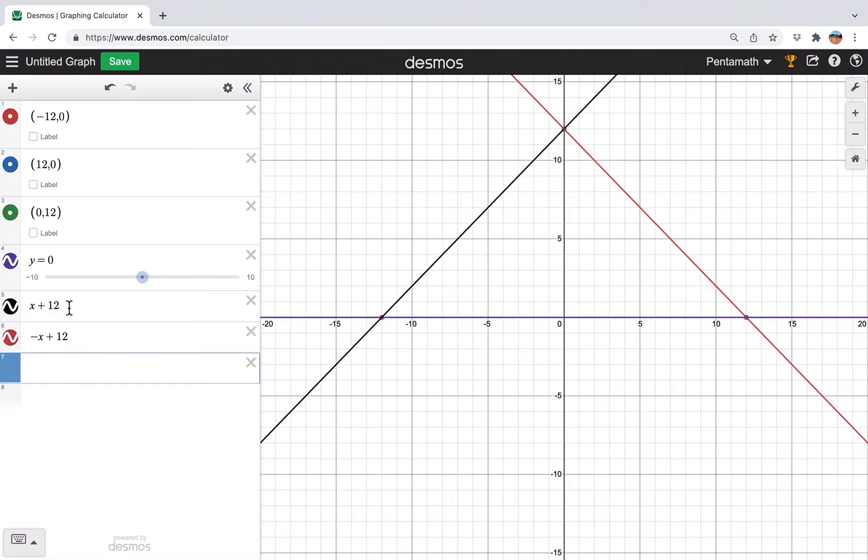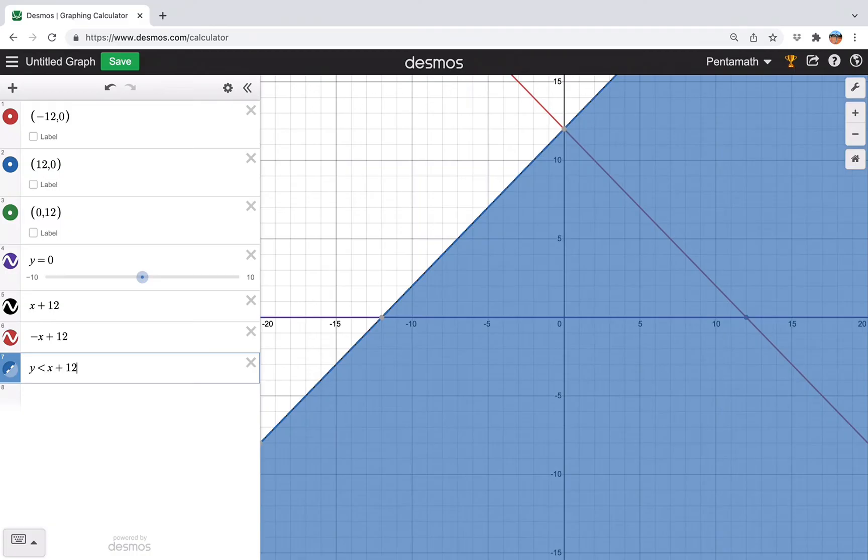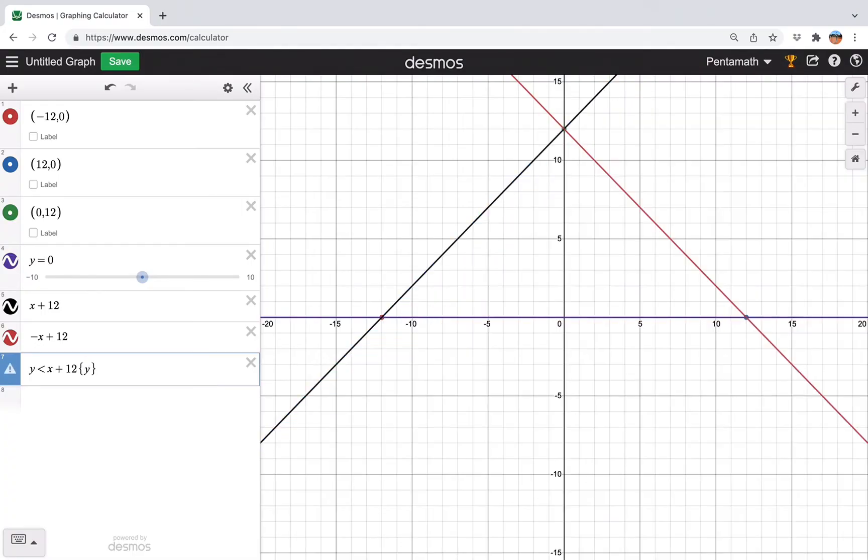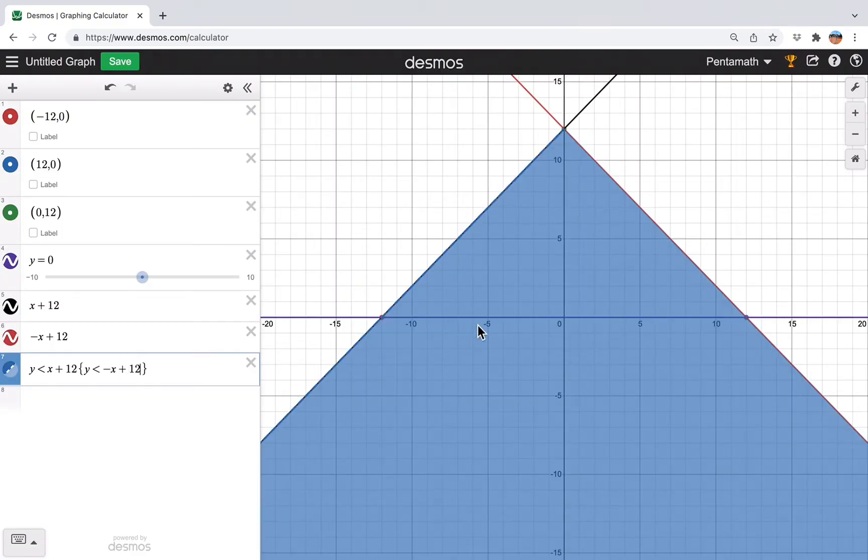First we start with one of these inequalities. So y is going to be less than x plus 12. So now you can see we've got this here. To add more inequality, we just use curly brackets. Then we also have y is less than negative x plus 12, like that.